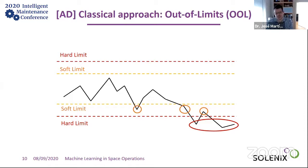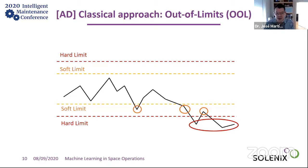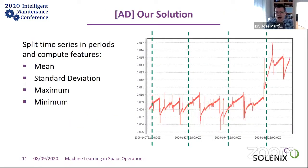The classical approach in space control systems is called out-of-limits monitoring. You define soft limits and hard limits, and every time a signal goes below or above them, engineers get an alarm. This has many limitations: not every parameter has defined limits, something can be anomalous even while in-limit, and as the satellite degrades these limits change. So it's not a good approach.